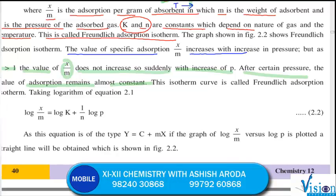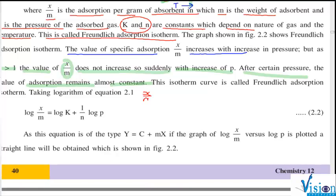If we take this equation x by m equals kp raised to 1 by n, and take log on both sides, then it becomes log of x by m equals log of k plus log of p raised to 1 by n. Or if we bring 1 by n outside the log, then 1 by n log p.